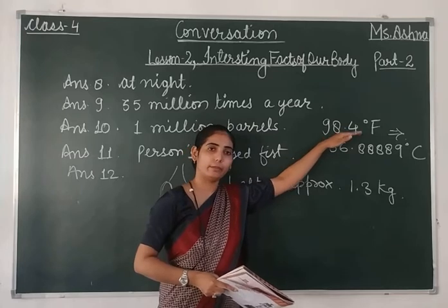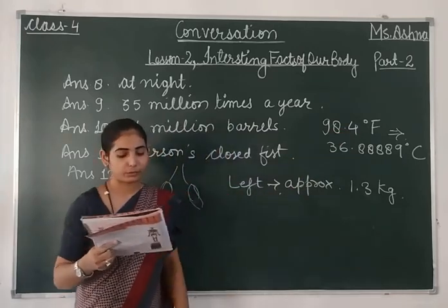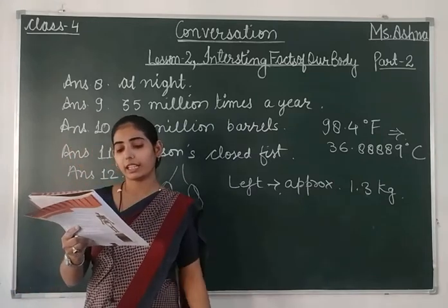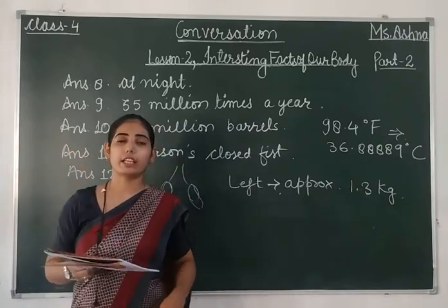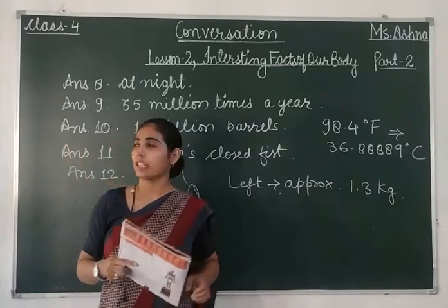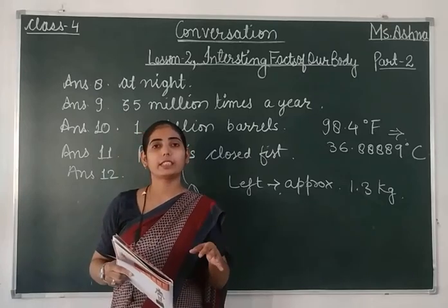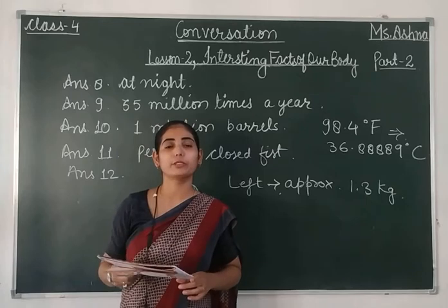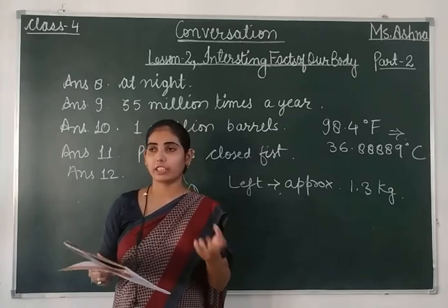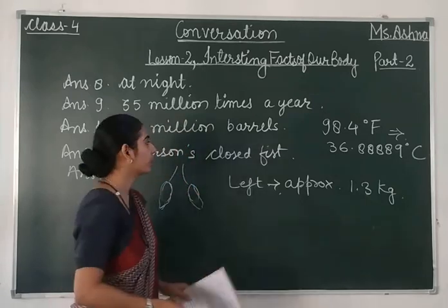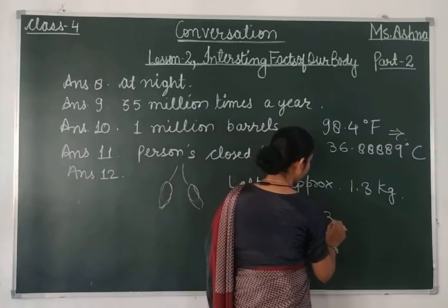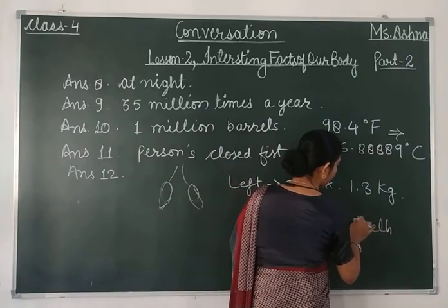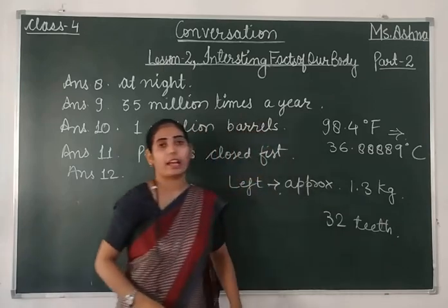Now the next and last answer: how many teeth does an adult person have? An adult person — meaning someone between 17 to 25 years of age — has 32 teeth.